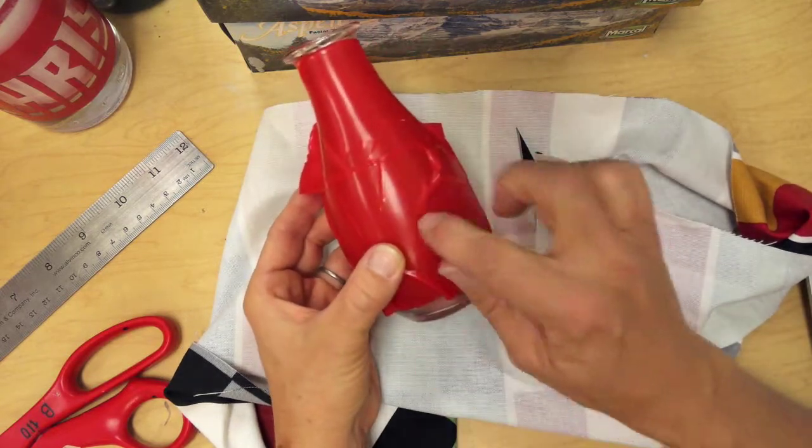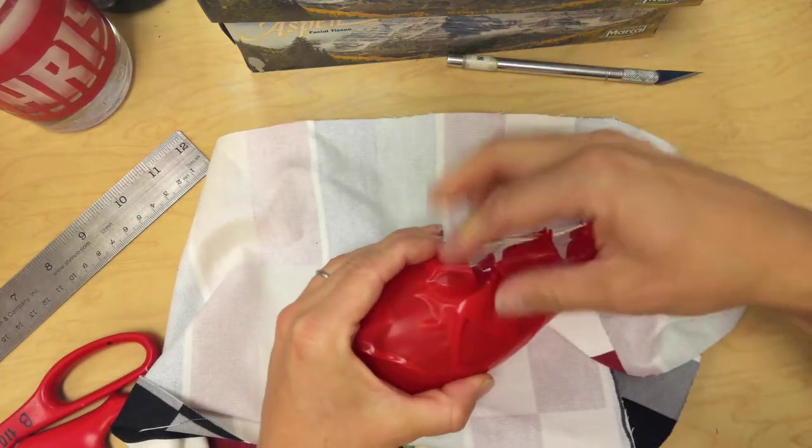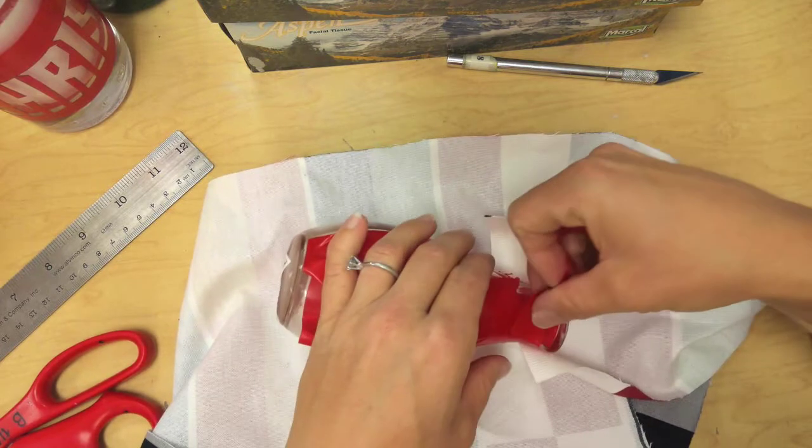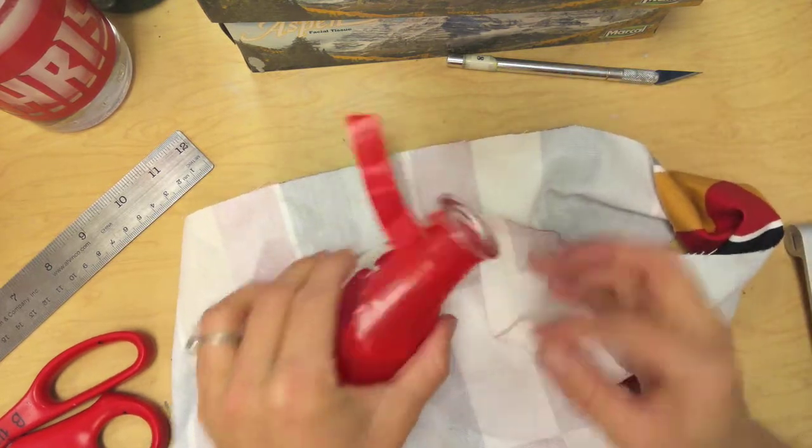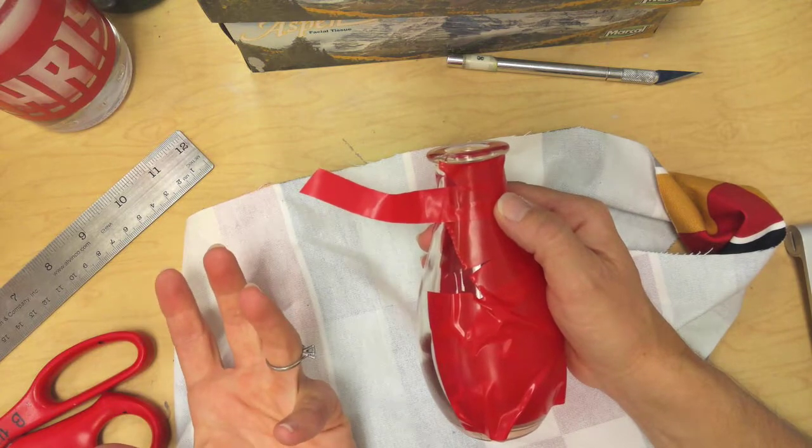On round areas, it's using the exacto knife and cutting it wherever it needs to stretch. For this area, if I needed to put something there, I would just take a piece of scrap tape and overlap that. Because again, if you've got two layers, it is possible. You can have two layers there. You guys have any questions?